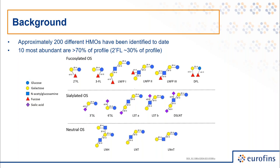In regards to prevalence in the mother's breast milk, I'm going to identify seven HMOs that Eurofins' methodology has identified, which are also the more common HMOs being used in products today. The first is 2-FL, or 2-fucosyllactose. The fifth most prevalent is lacto-N-tetraose. The sixth is 3-fucosyllactose. Seventh is 6-sialyllactose. Ninth is lacto-N-neotetraose. Tenth is difucosyllactose. And thirteenth is 3-sialyllactose.